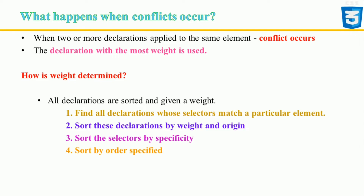There are four steps to sorting. First, find all the declarations whose selectors match a particular element. Then sort these declarations by weight and origin, and sort the selectors by specificity. Finally, sort by order specified.